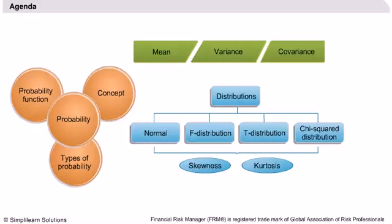Then we will describe the key properties of the normal, standard normal, multivariate normal, chi-squared, Student's T, and F distributions.